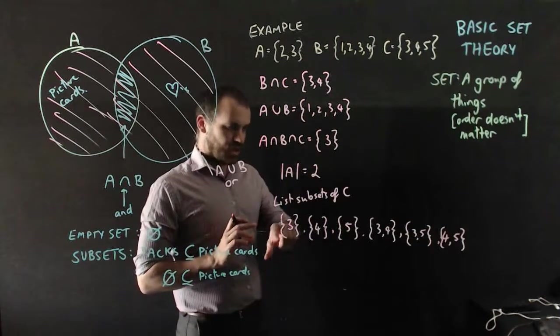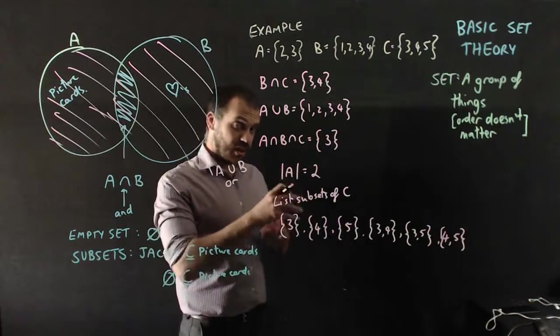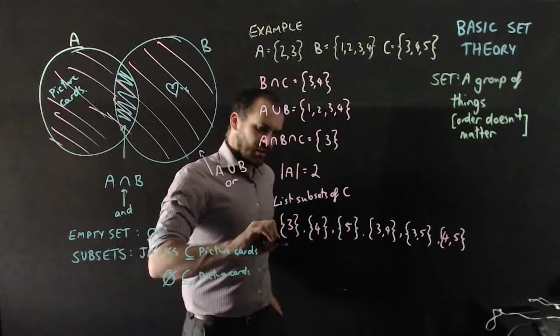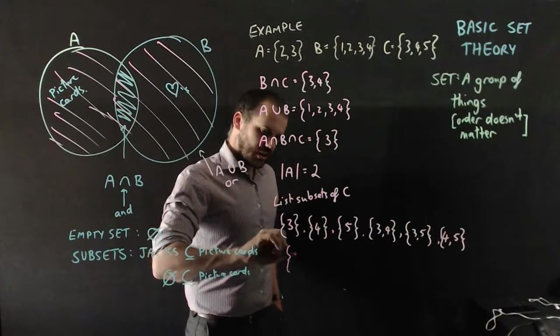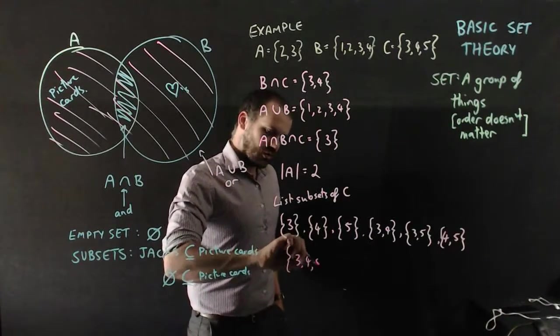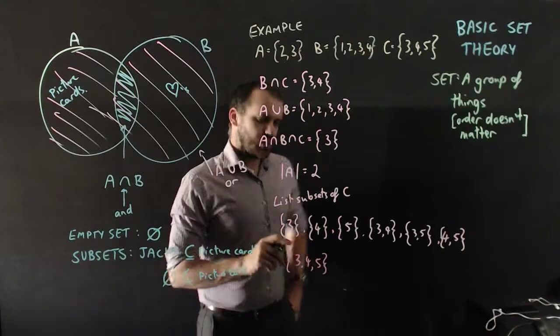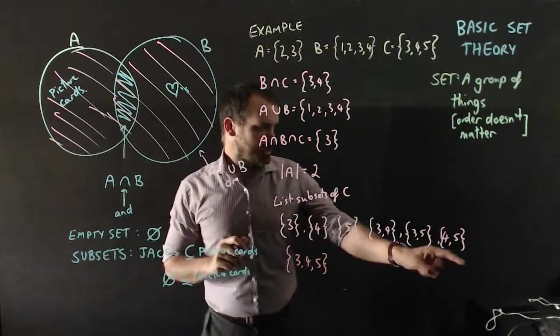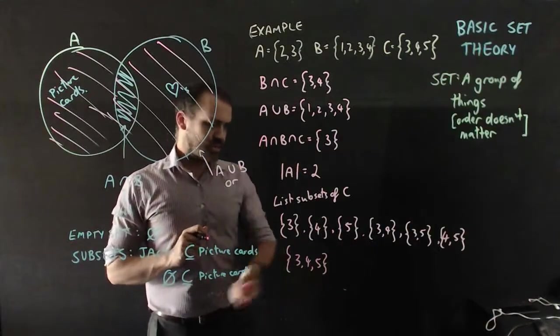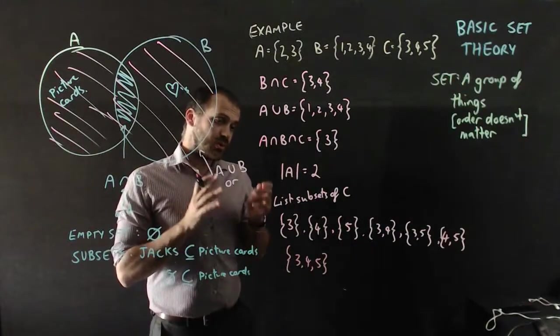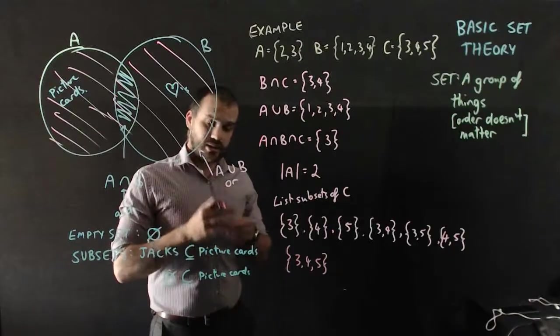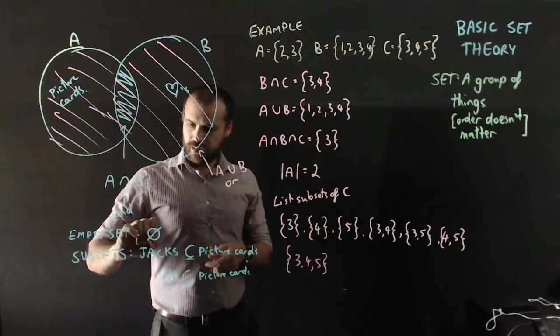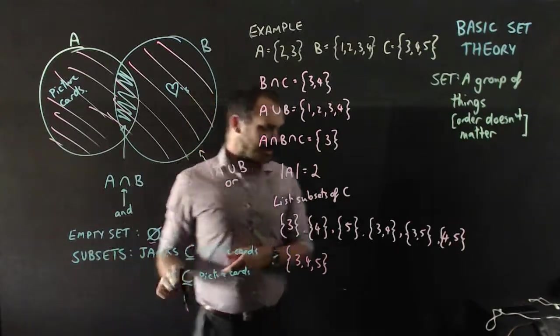That's it. Now, don't forget that a set is a subset of itself. So that means that another set is {3, 4, 5}. I've got all the one element sets, all the two element sets, the one three element set. There is one more subset of C, and that is the empty set because an empty set is an element of itself.